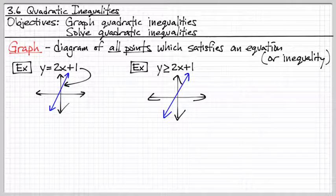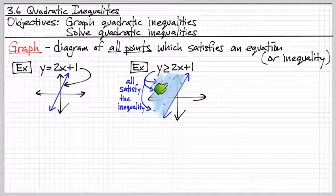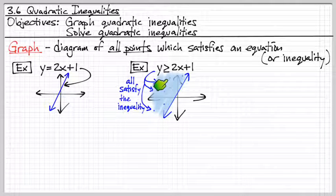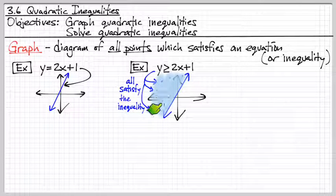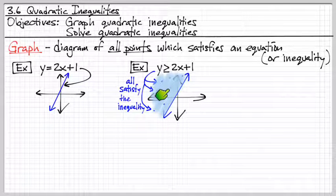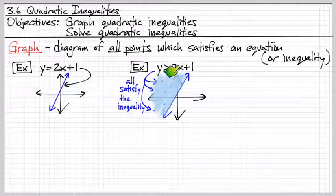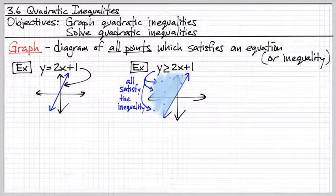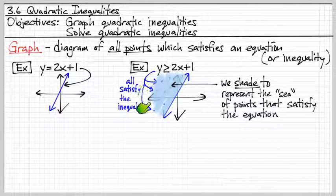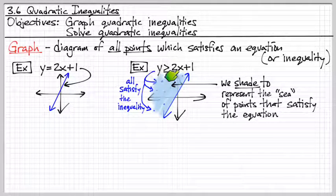So, if we have now an inequality, we graph it where we would shade this entire side here. And what this means is that every single point where it's darker or shaded, including this line, if we plug this x, y into this, it satisfies it. We shade as a way to graphically represent the entire sea of points that satisfy this inequality.